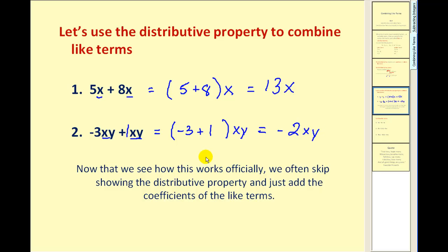Now officially the distributive property is what allows us to combine like terms. But very quickly most people skip this intermediate step. Essentially what we can do to combine like terms is just add the coefficients. So five plus eight would give us thirteen and the variable part stays the same.